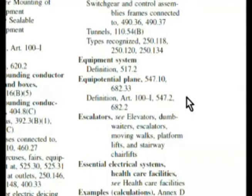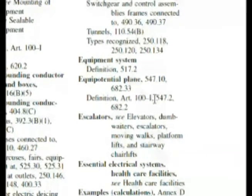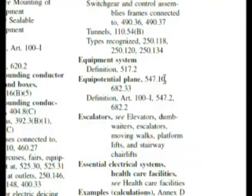Remember, definitions don't always end up in Article 100. Now to see that it should be in there, I might want to go back and double check. However, I'm going to move ahead and go to 547.2 — and I also see 547.10. I've also got 682.2 and 682.33. Let's go to 547.2 right now.